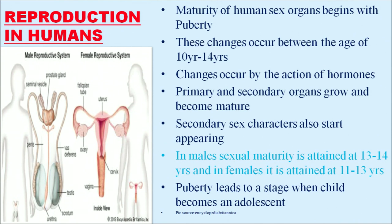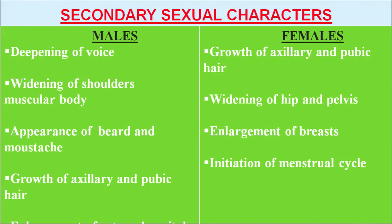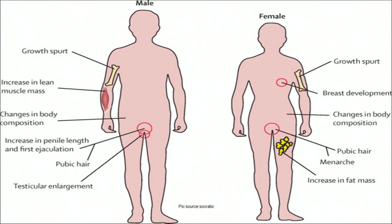In males, sexual maturity is attained at the age of 13 to 14 years, but in females it is earlier, attained at 11 to 13 years. Puberty leads to a stage when a child becomes an adolescent. Secondary sexual characters in males include deepening of voice, widening of shoulders, muscular body, appearance of beard and mustache, and growth of axillary and pubic hair. In females there is growth of axillary and pubic hair, widening of hip and pelvis, enlargement of breasts, and initiation of the menstrual cycle.